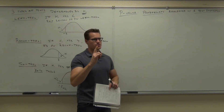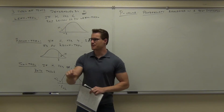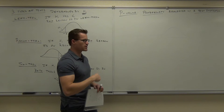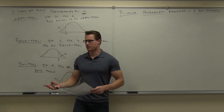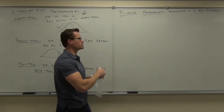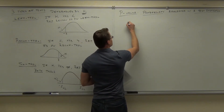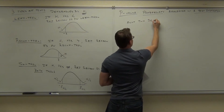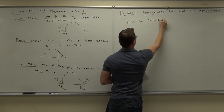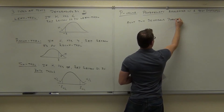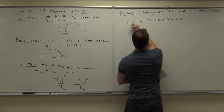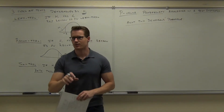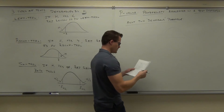There are only two decisions. You reject the null hypothesis if it's in the rejection region — for the traditional method — or if the P-value is less than alpha for the P-value method. Or you fail to reject the null hypothesis. You can't ever accept it. Those are the only two options. It's already decided for you based on the math; you just have to do the math correctly.